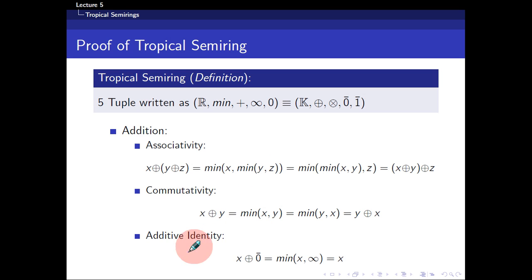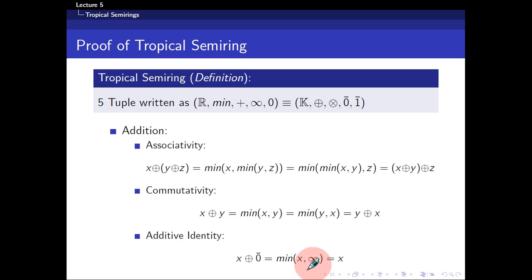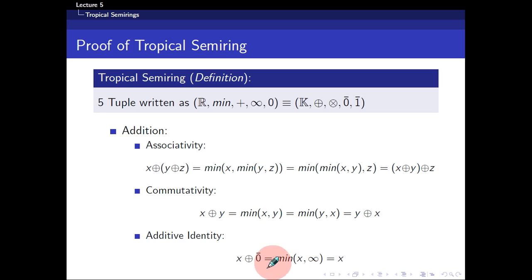Finally, I need to check for the additive identity. This is a bit unusual if this is your first foray into abstract algebra. The zero-bar in this case is positive infinity. Suppose you are taking x plus zero-bar in the tropical semi-ring — it means taking the minimum between x and positive infinity. Any real number compared to positive infinity is going to be less than it, so the minimum function is going to return x. Hence, x plus zero-bar gives you x, and the additive identity is positive infinity.